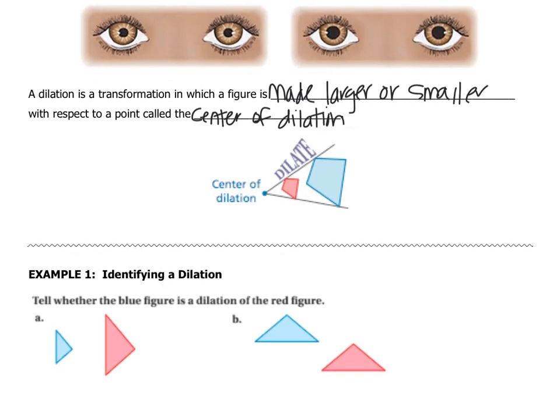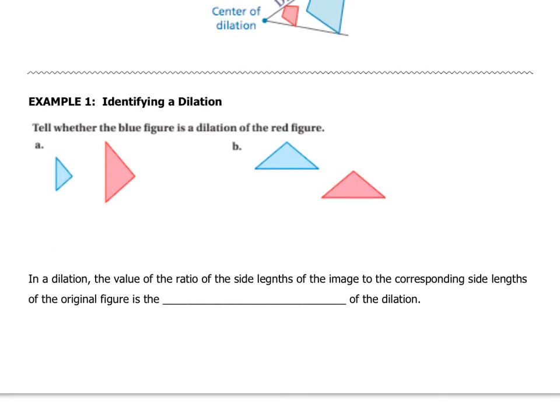Let's look at example one. We have to just simply tell whether it is a dilation. So does it look like the figure got bigger or smaller? And if the answer is yes, then it's a dilation. So this shape is the same shape, only bigger. So this is a dilation. And this triangle over here is not. It looks like it was just a translation.